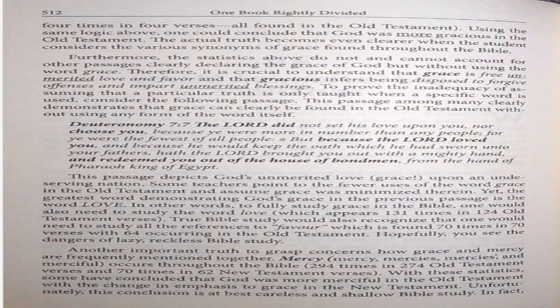Deuteronomy 7:7. The Lord did not set his love upon you, nor choose you, because you were more in number than any people, for you were the fewest of all people. But because the Lord loved you, and because he would keep the oath which he had sworn unto your fathers, hath the Lord brought you out with a mighty hand, and redeemed you out of the house of bondmen from the hand of Pharaoh, king of Egypt. This passage depicts God's unmerited love — grace — upon an undeserving nation. Some teachers point to the fewer uses of the word grace in the Old Testament and assume grace was minimized therein.